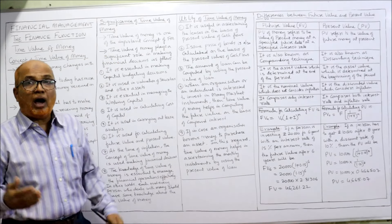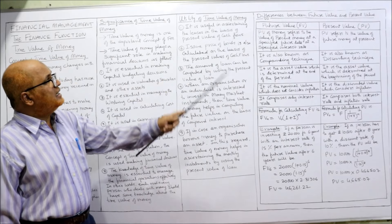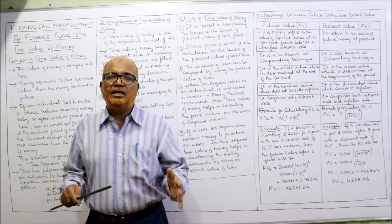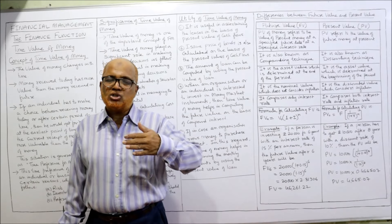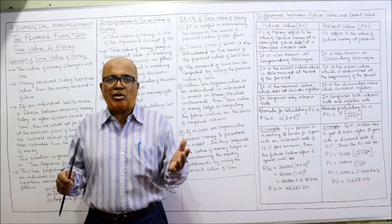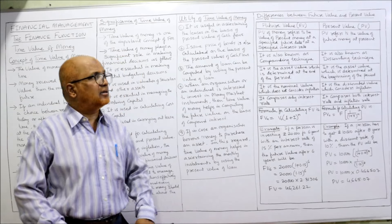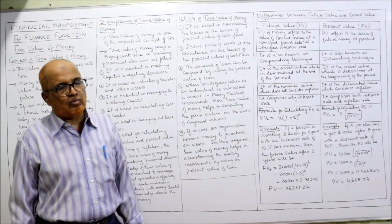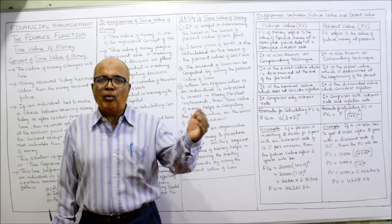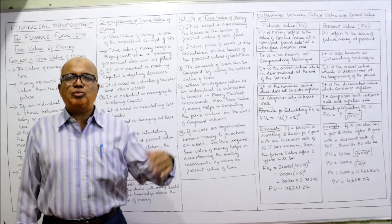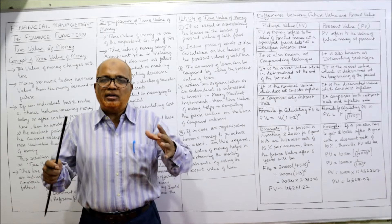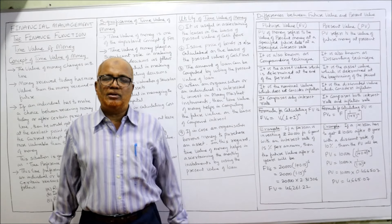Now, the utility of time value of money — how it is useful. It is useful in ascertaining leases on the basis of the present value of cash inflows. When an asset is taken on lease, cash outflows will be there for a number of years, so to evaluate whether it is better to take the asset on lease or not, the concept of time value of money is used. Next, the issue price of bonds is also determined on the basis of present value. Bonds are instruments issued by a company to raise funds from the public, and interest has to be paid on them.